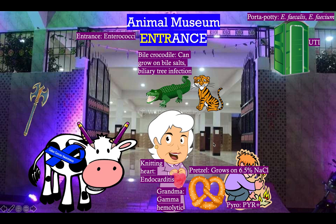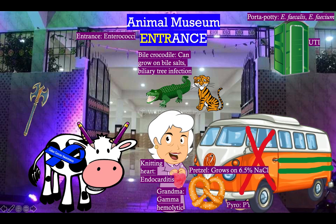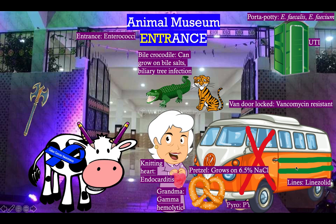Notice that while grandma waits she is knitting a heart, because enterococcus and strep bovis both cause endocarditis. Now they're done with the animal museum and they're getting picked up by the van, which is locked — notice the big X on it — because enterococcus is often vancomycin resistant. When you've got VRE, you treat it with linezolid, represented by the lines on the van, or tigecycline, represented by this cute little tiger.